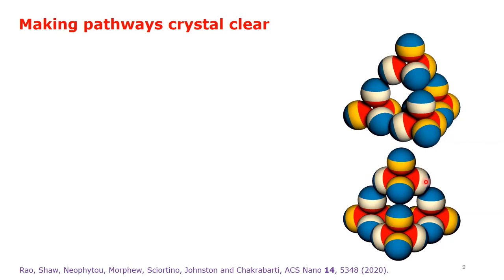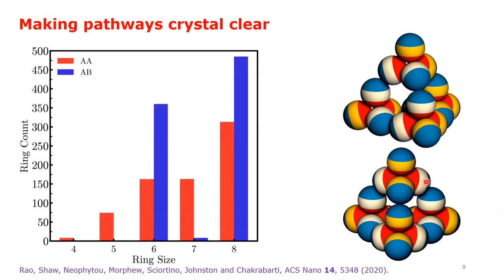The ring statistics show that the two-stage assembly via tetrahedra suppresses the formation of five and seven-membered rings, which when present prohibits the emergence of long-range order.